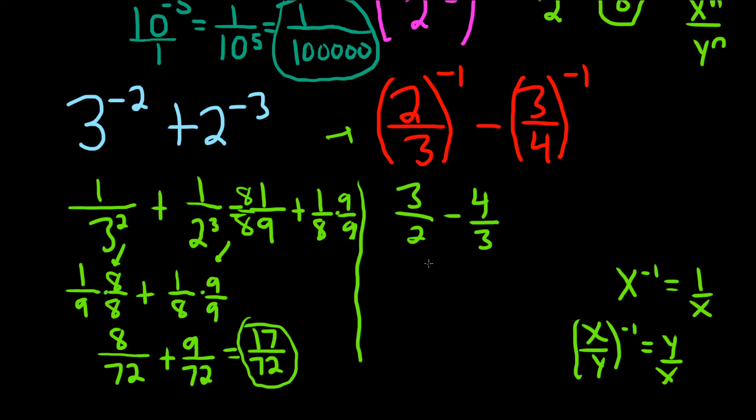And again, in this case, we want to subtract these. So what we can do is make the bottom a 6, because 2 times 3 is 6. So we'll multiply this one by 3 over 3, and this one by 2 over 2. And that will give us 9 over 6, minus 8 over 6. And then 9 minus 8 is 1, so we get 1 over 6.